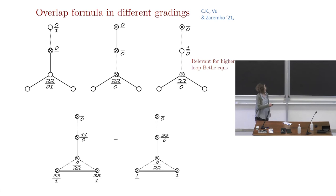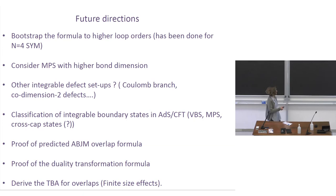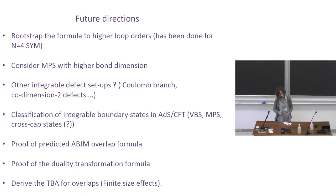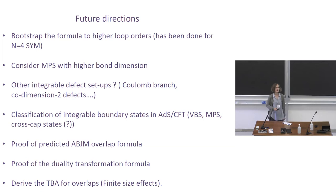These fermionic duality relations seem quite constraining for overlap formulas. Future directions include: proving the ABJM overlap formula conjectured from fermionic duality covariance; proving analytically the duality transformation formula for the Gaudin determinant, which is surprisingly hard despite involving only determinants and polynomials; bootstrapping the ABJM formula to higher loop orders as was done for N=4 Super Yang-Mills; and studying other defect setups within AdS/CFT such as codimension-two defects. Thank you very much for your attention.